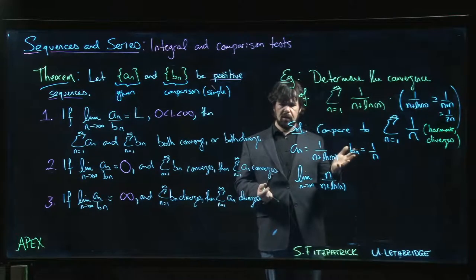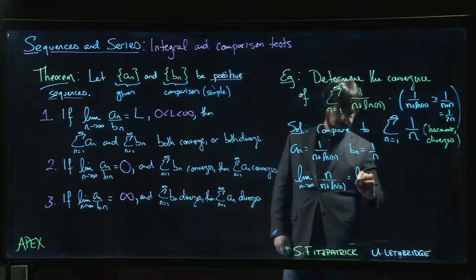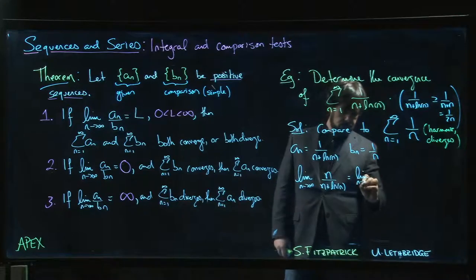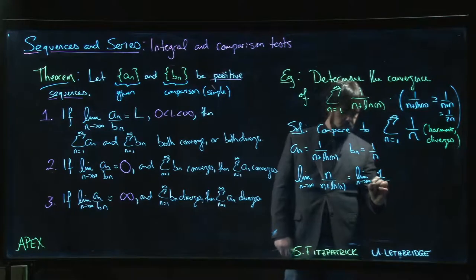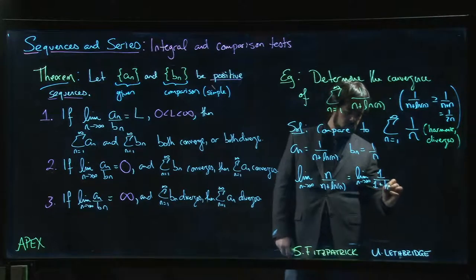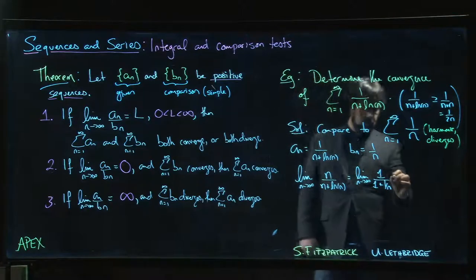Use L'Hôpital's rule. Shall we use L'Hôpital's rule? Let's use L'Hôpital's rule. It's infinity over infinity. Derivative of n is 1. Think of it as x if you want. 1, 1, 1 over n. Okay. n is going to infinity. 1 over n is going to go to 0.